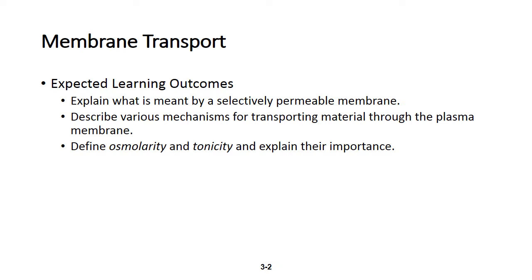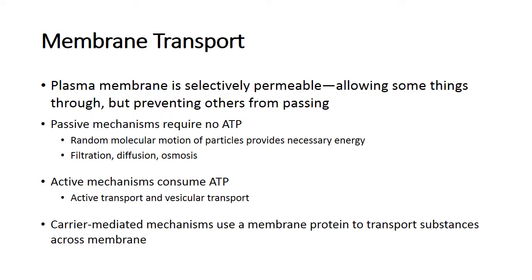Tonicity deals with hypertonic, hypotonic, and isotonic solutions. The plasma membrane, or cell membrane around our cells, is a selectively permeable membrane — it allows some things to enter and exit the cell while preventing other things from passing through.